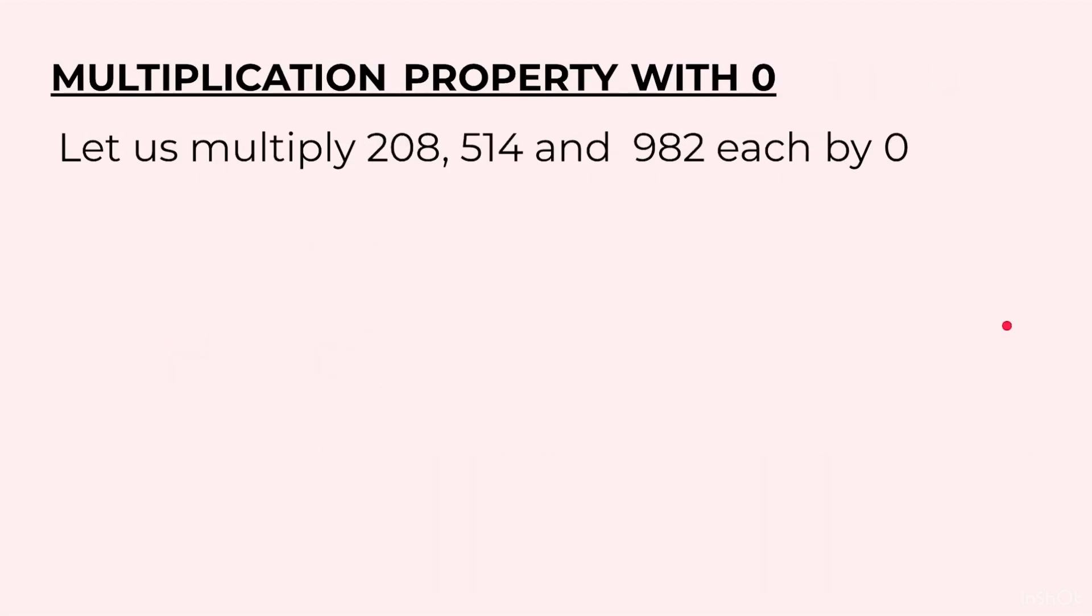The fourth and the last property is multiplication property with 0. Let us multiply 208, 514 and 982 each by 0.